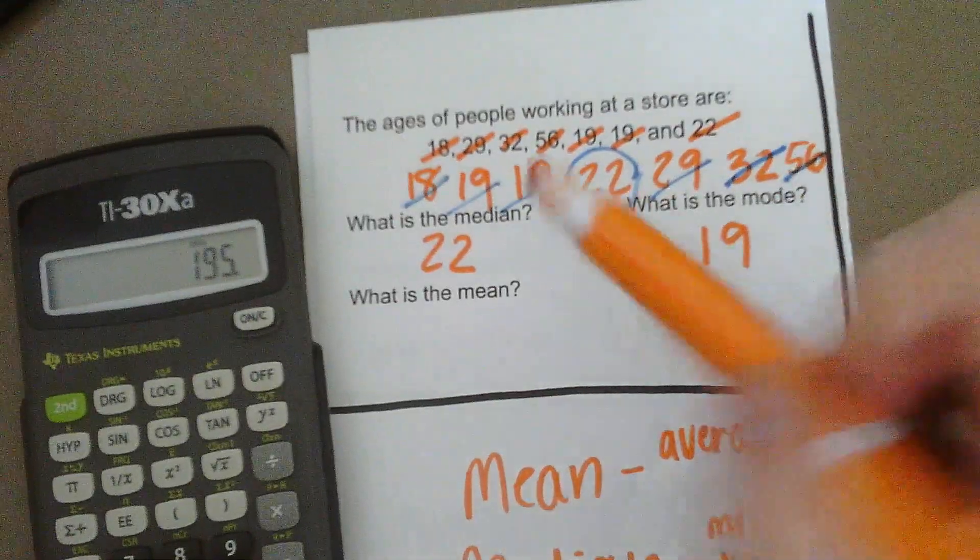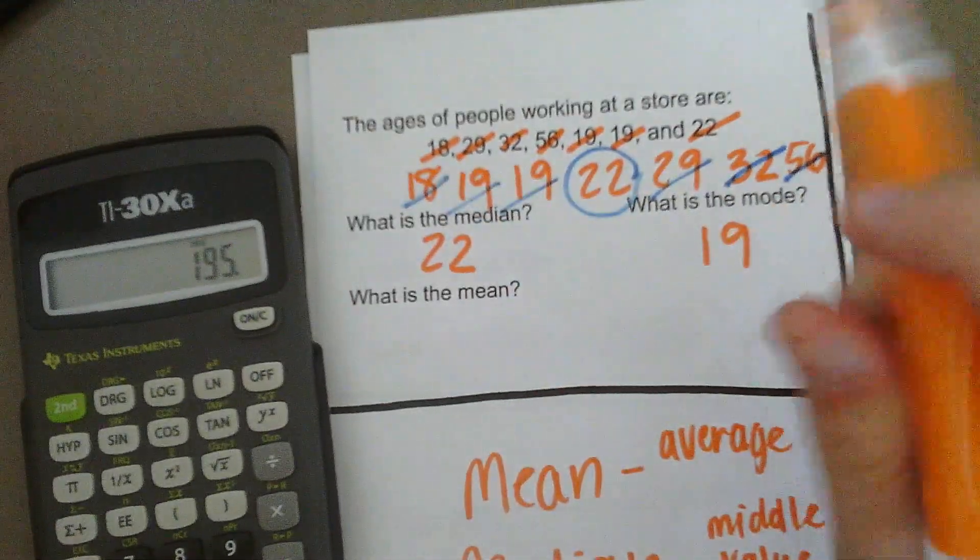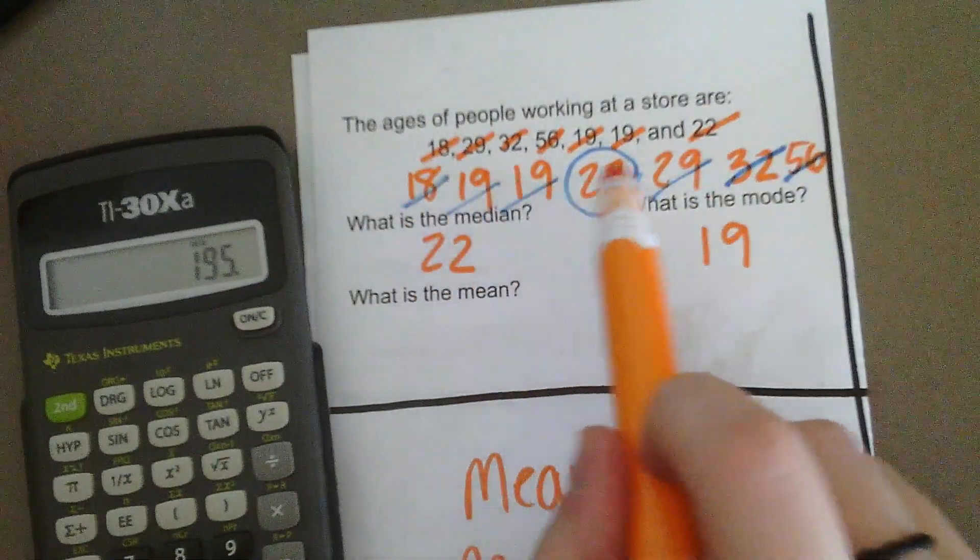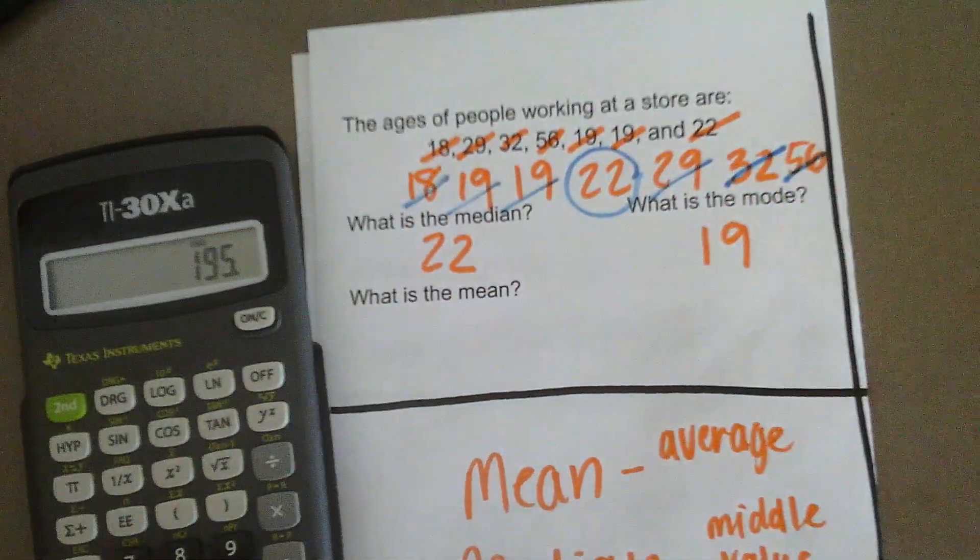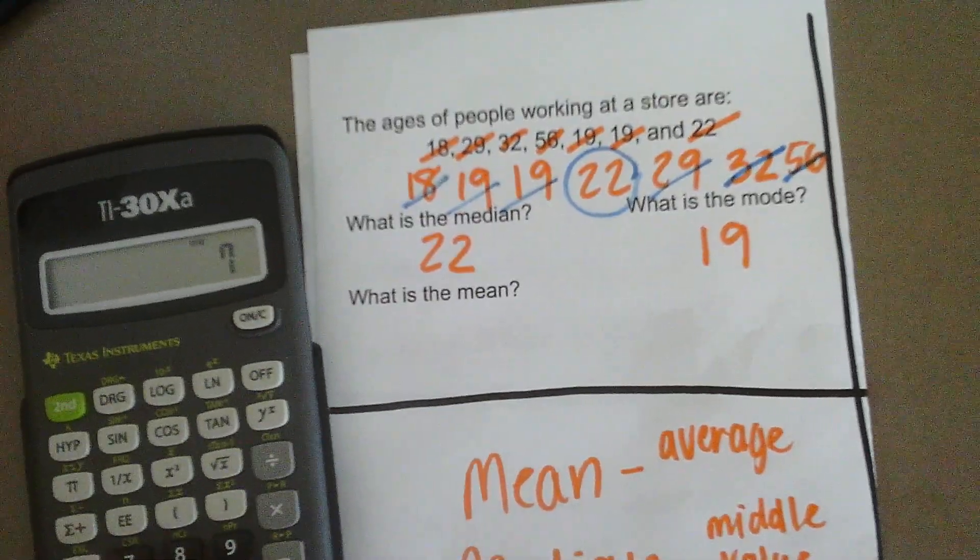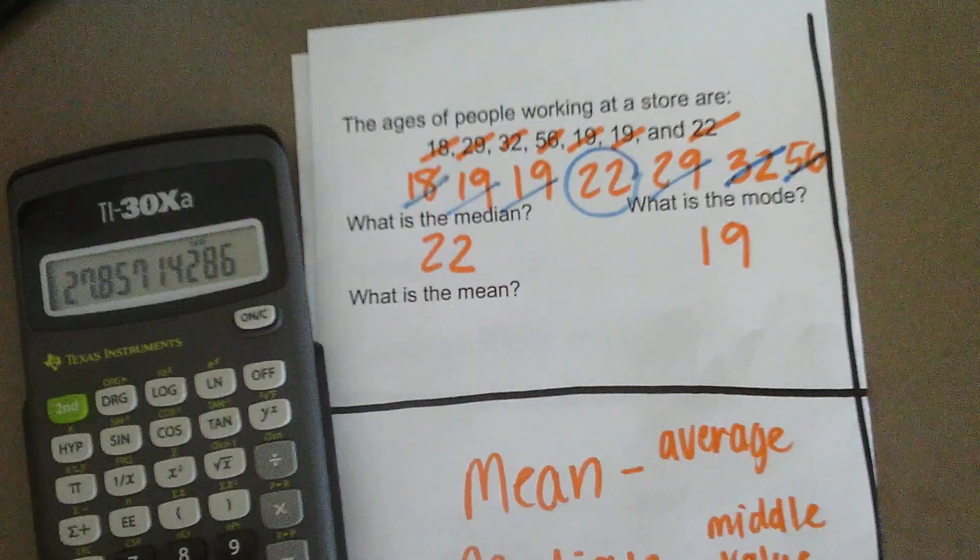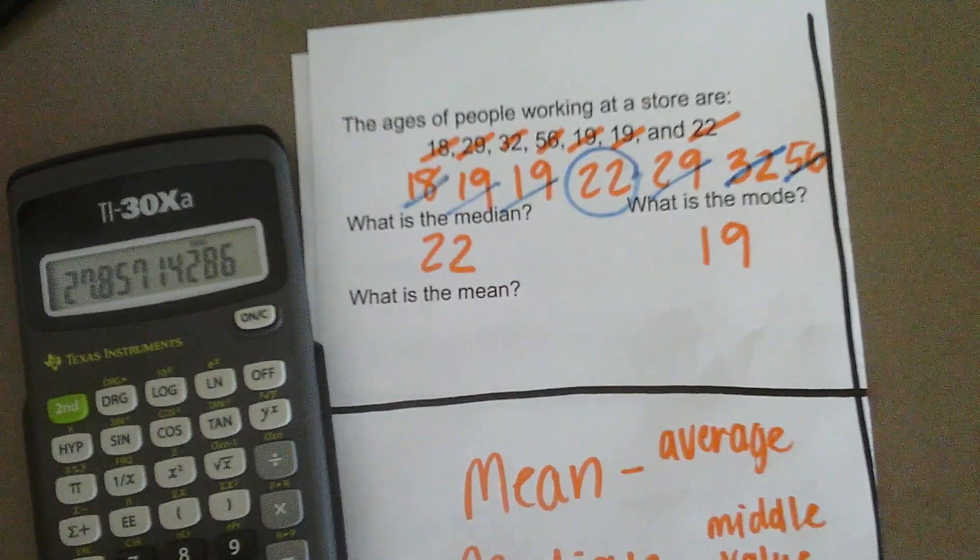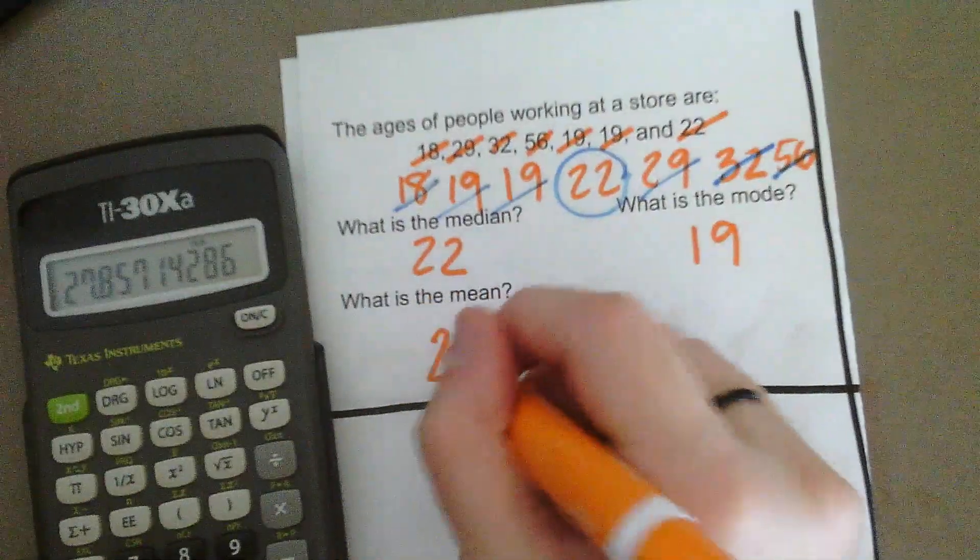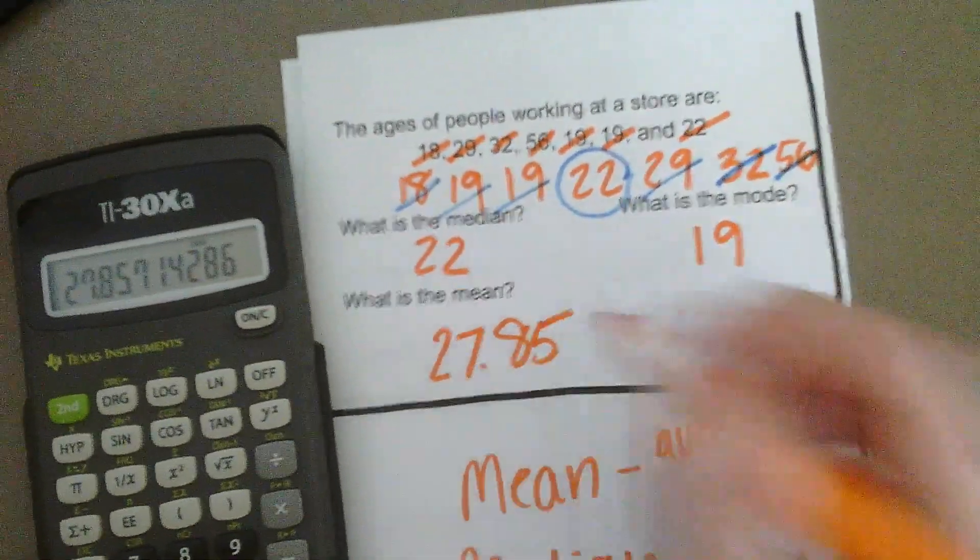Then, to find our mean, we added up all our values. Now, we divide by how many values there are. So, 1, 2, 3, 4, 5, 6, 7. There's 7 values. So, we're going to divide our total divided by 7. This is our mean. So, our mean age at this store, the worker's mean age, or average age, is 27.85.